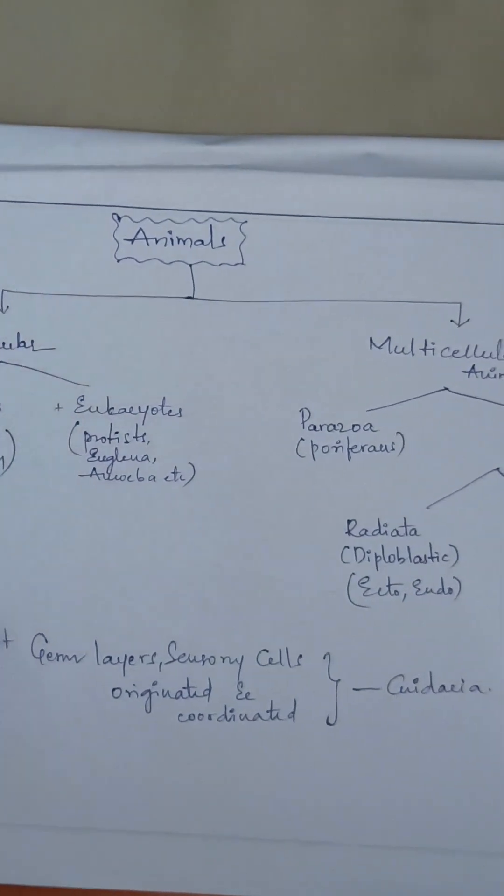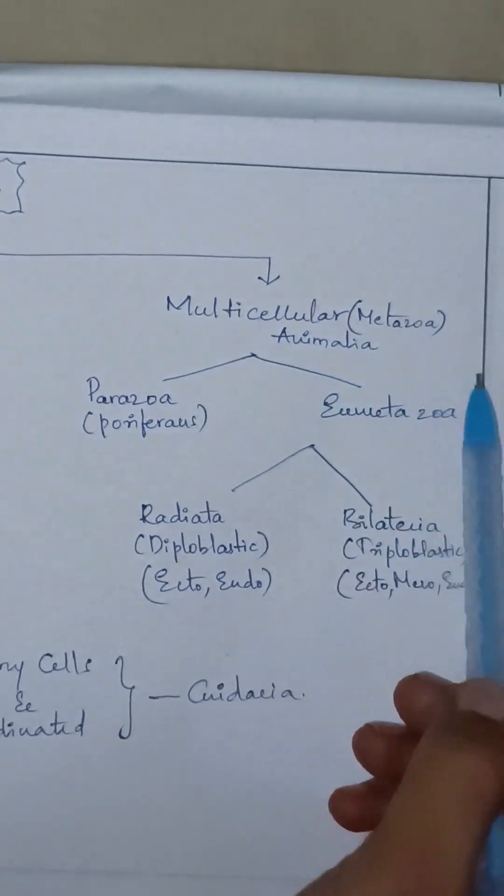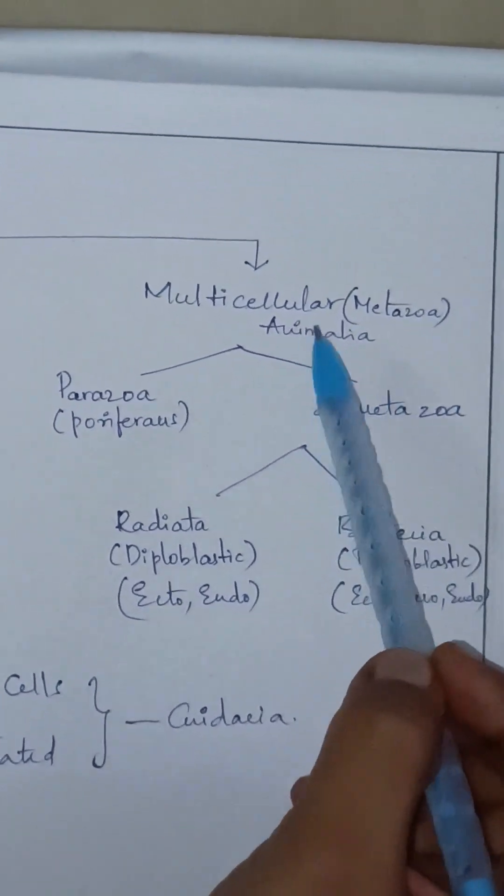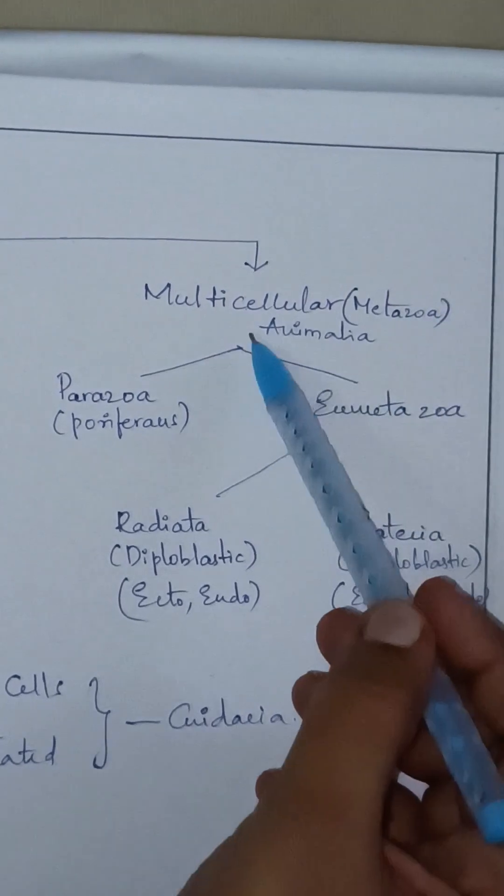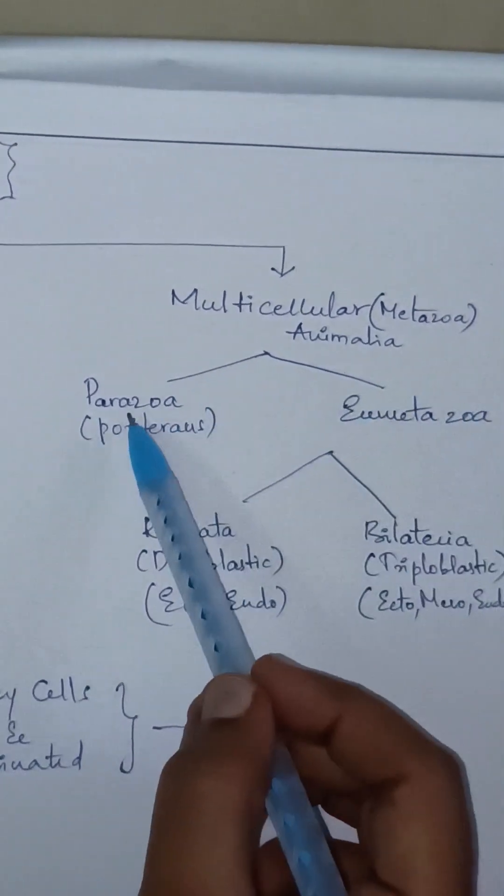Coming to multicellular organisms, that is Animalia, they are categorized into two types: Parazoa and Eumetazoa. Under Eumetazoa, we have Radiata and Bilateria.